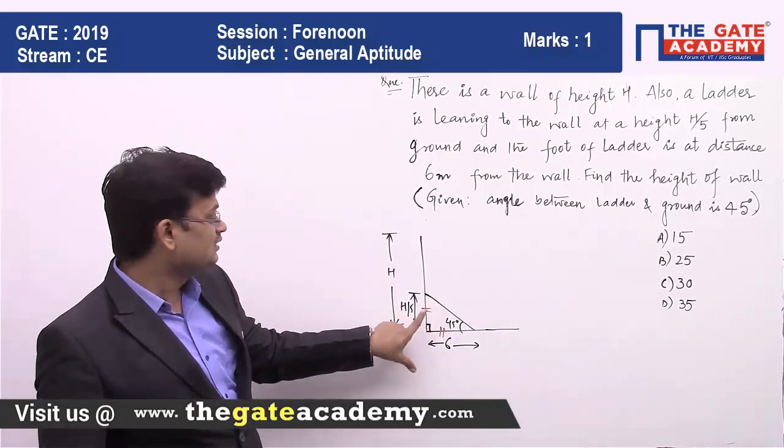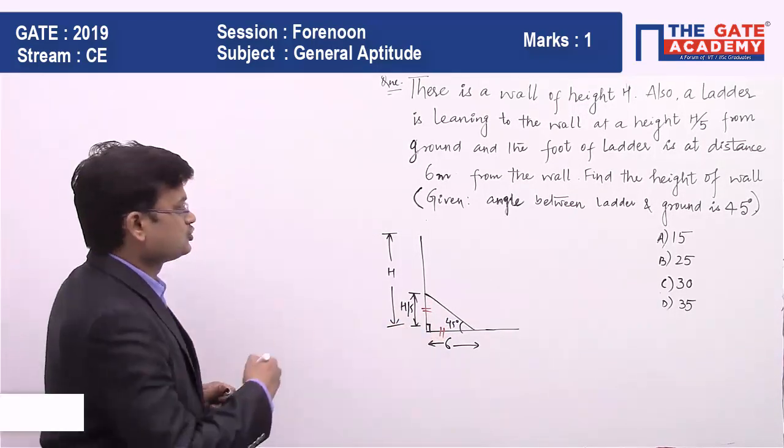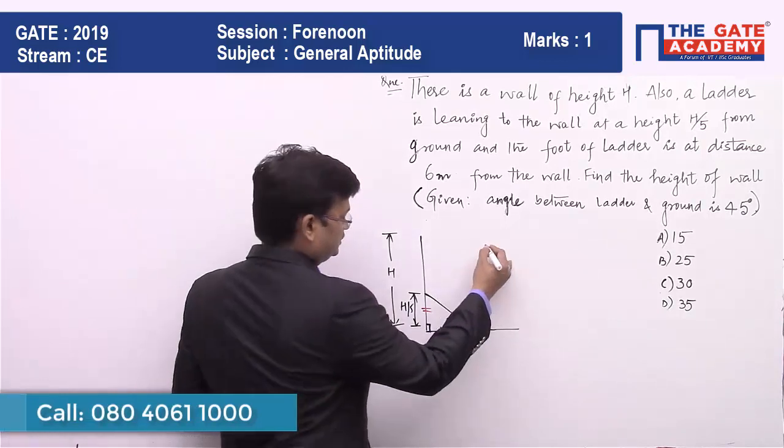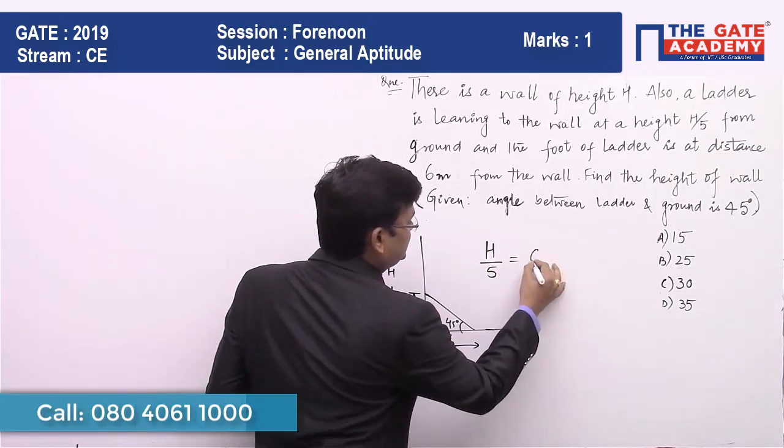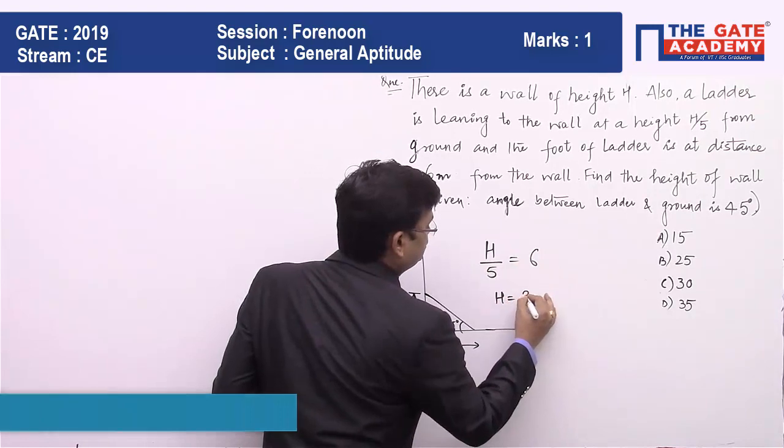So this becomes a cakewalk now. h by 5 is equal to 6, so h will be equal to 30.